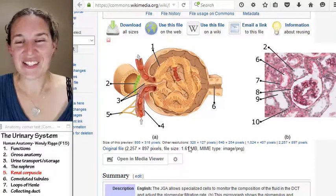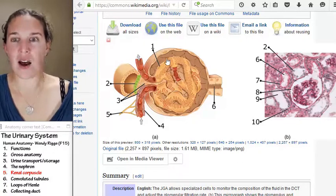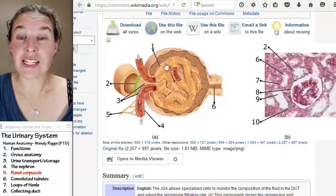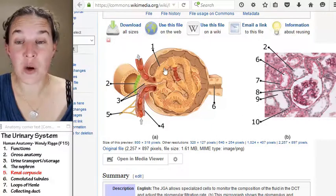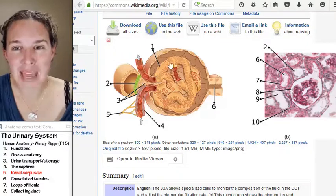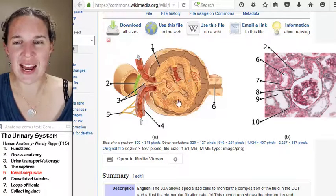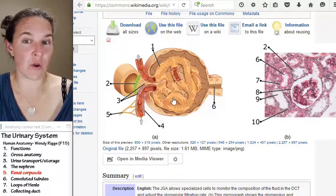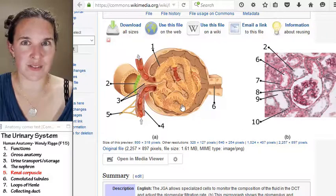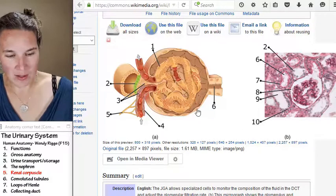All right. So I think, did I label everything capsular space? I didn't. I wanted to tell you that the visceral layer of Bowman's capsule, the cells that make up that visceral layer, they're called podocytes. And I think of podfoot toes and these are little toes that are sticking out here. So these are podocytes.